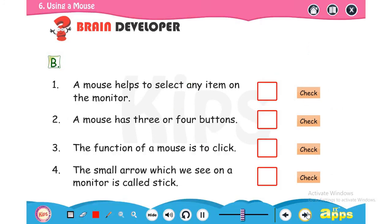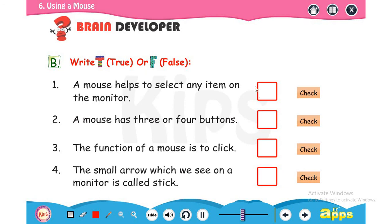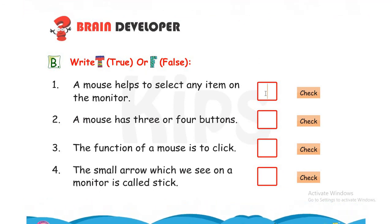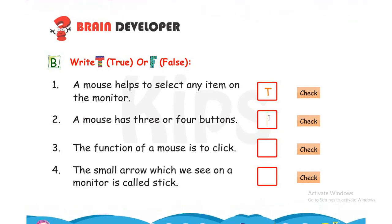Now next. Write T for true or F for false statements. A mouse helps us to select any item on the monitor. That is true. Because with the help of monitor we can see which item we have to select with the help of mouse. A mouse has three or four buttons. It is false because mouse has two or three buttons.